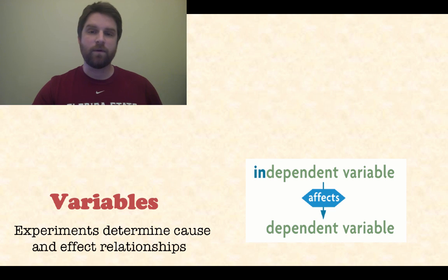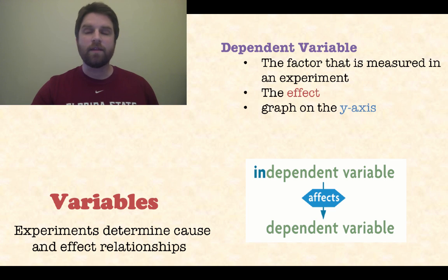This is different from the dependent variable. This is the factor that is measured in an experiment. This is affected by the independent variable. In the cause and effect relationship, the dependent variable is the effect and it is graphed on the y-axis.